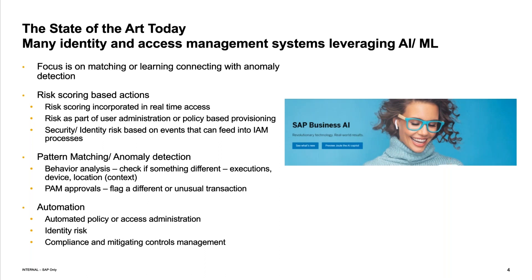Another area we've invested a lot in is anywhere in the solution where there's a lot of repetitive events — maybe the user doesn't have all the information they need to make a decision, or there are additional details that are difficult to get to. We've been using machine learning and AI to help prevent rubber stamping and to provide better information that might help an approver or reviewer make the right kind of decision. It's broadly around decision support, using pattern matching and clustering anomaly detection — it's not really generative AI, but it is based on machine learning.